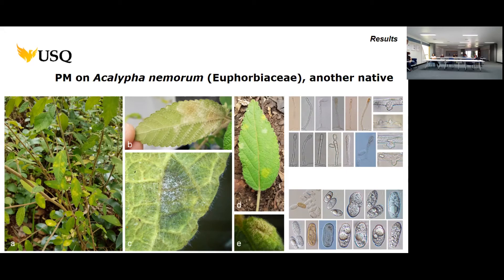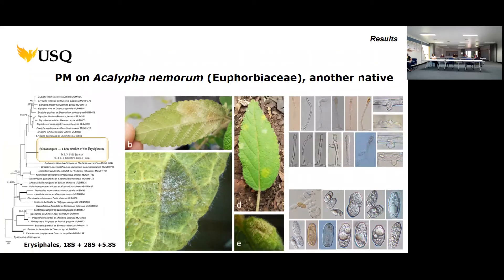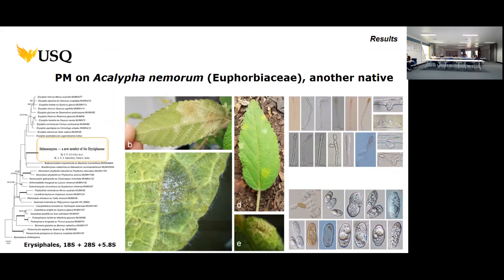We sequenced the ITS, 28S, and 18S sequences, and based on combined analysis, this was clearly a new lineage — meaning a new genus. However, when I checked the old literature, I found a description of this unique morphology powdery mildew from India from the 1950s. A gentleman in India had already recognized this powdery mildew on another host species, described it, and then it was forgotten — not even included in the monograph, simply not considered as a new genus.